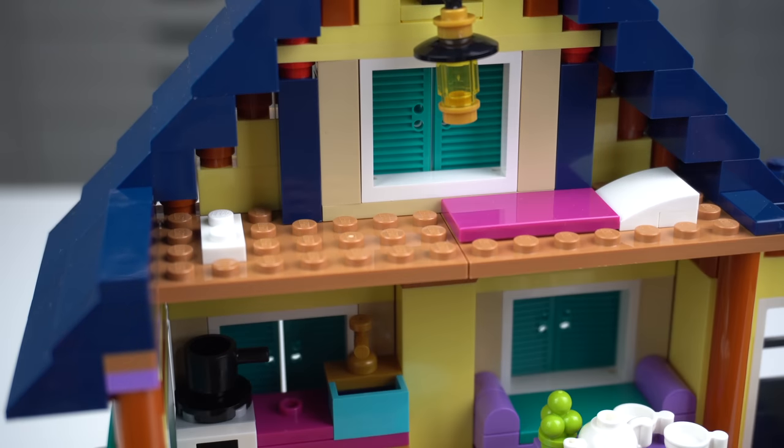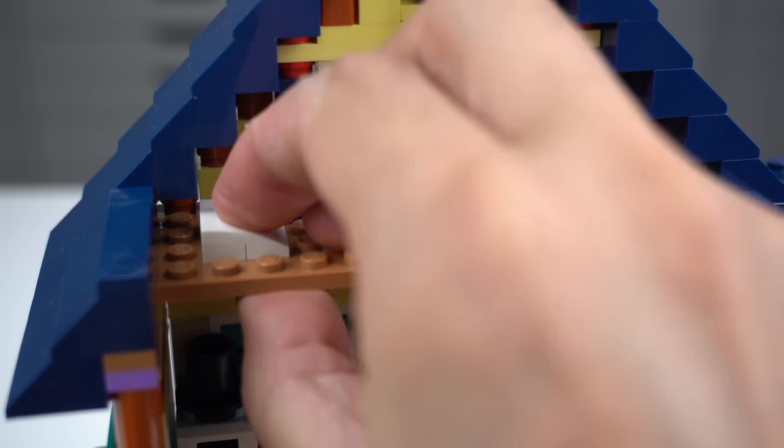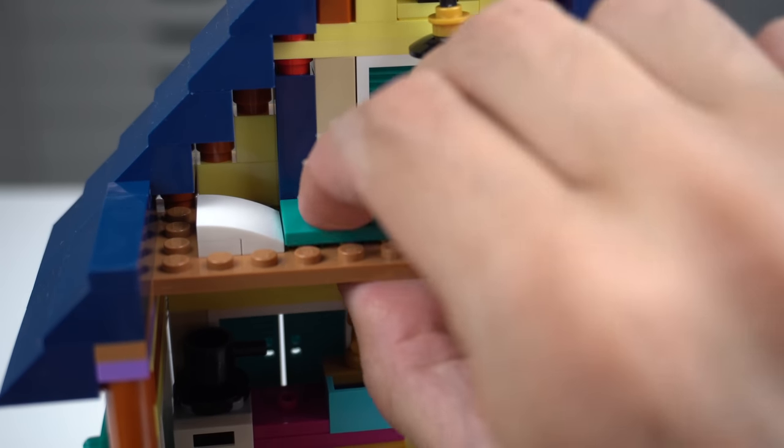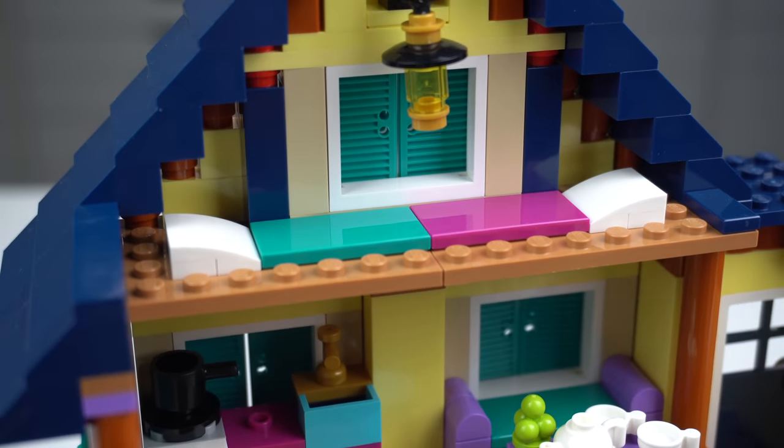Now sleeping bags. Three pieces for a sleeping bag. 1x2 plate, 2x2 slope, and then a 2x4 tile in the teal color which I love, so bonus points for that for the designer.